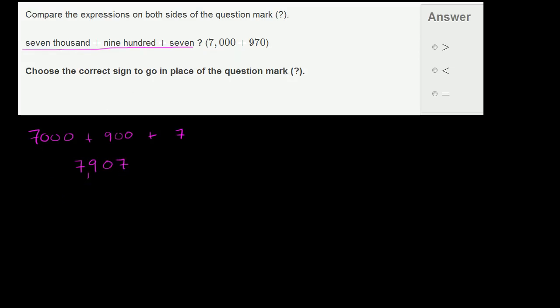Now let's compare that to what we have on the right-hand side of the question mark. On the right-hand side, we have 7,000 plus 970, which is 7,970. Or if we wanted to expand it out, we could write that as 7,000 plus 900 plus 70. And then we have zero ones.